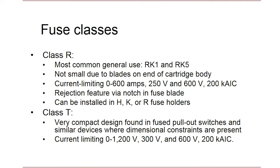Class R fuses are found in a wide variety of applications up to 600 amps. The two types you'll typically encounter are RK1s and RK5s, which we'll discuss shortly. Class T fuses are typically available in ampacities up to 1200 amps. They are dimensionally much smaller than other classes, are typically very fast acting with a high degree of current limitation, though not as common. You might find them where their small size is an advantage, such as pull-out fuse switches or meter sockets.